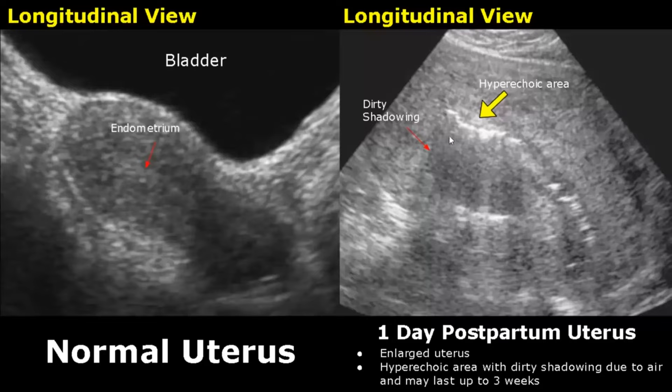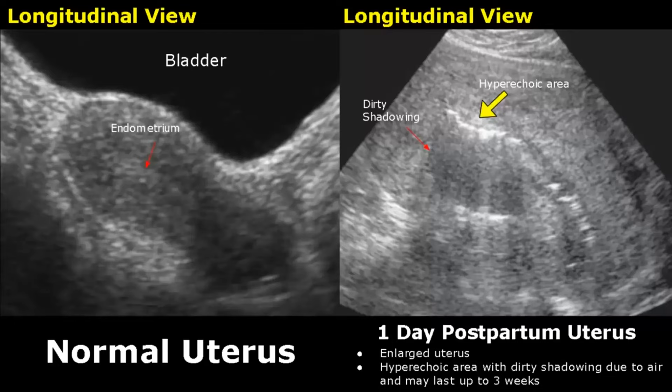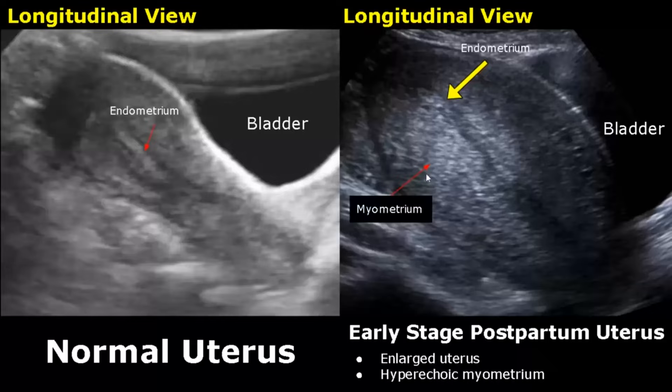Some of these hyperechoic areas are due to blood clots, and some can have dirty posterior shadowing, indicating air present in the endometrial canal. The air may last up to three weeks. These are normal postpartum features. An enlarged uterus is seen in early-stage postpartum uterus, where the inner layer of myometrium can be hyperechoic — another normal postpartum appearance.